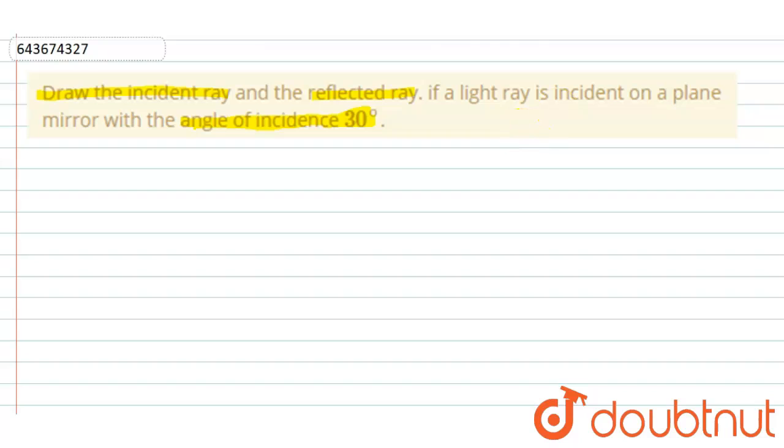For this solution, we have to find the angle of reflection to draw the incident ray and the reflected ray. As given in the question, the angle of incidence is 30 degrees.